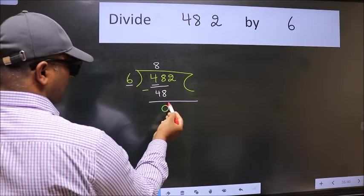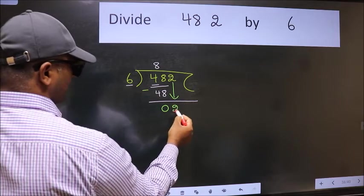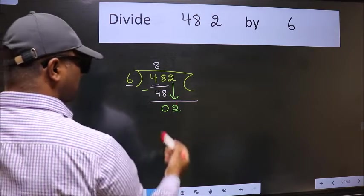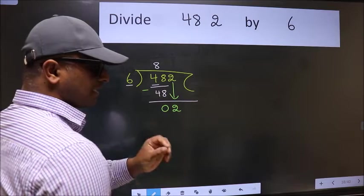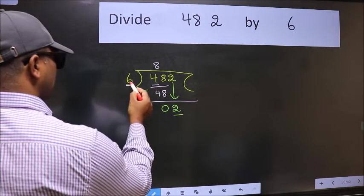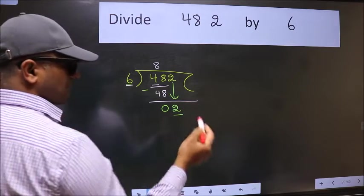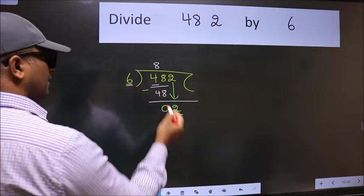After this, bring down the beside number, so 2 down. After this step, the mistake happens, and the mistake is this: here we have 2 and here 6. 2 is smaller than 6, so what many do is they directly put dot, take zero.